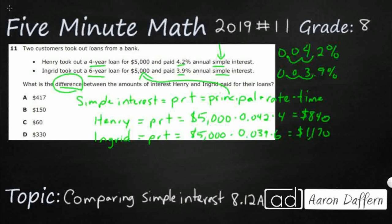You can see that even though it was a smaller interest rate, those two extra years definitely made it cost more. But you won't find either of those individual amounts as an answer, because we need the difference between the two amounts. So 1,170 minus 840 — the difference between the amounts of interest — gives us $330. So our answer here is D.